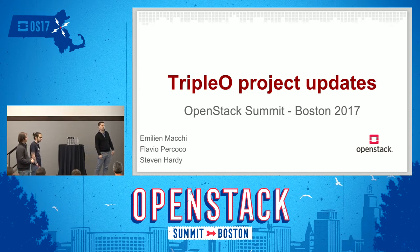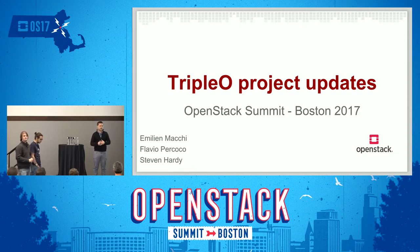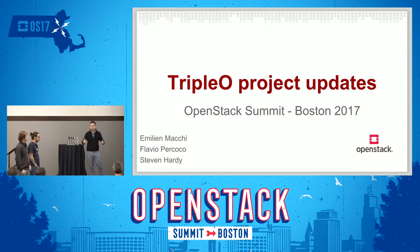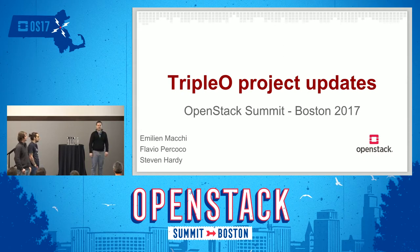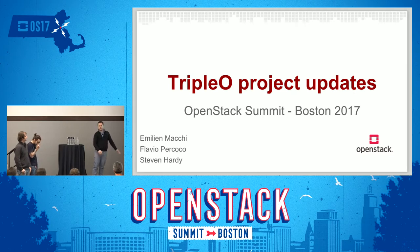This session is about what's going on in TripleO — what we are doing now and what we will do next. If you are interested in TripleO or just curious, this is a good place to be. My name is Emilien Macchi. I'm French, I live in Canada, and I work for Red Hat. I'm the current Project Technical Lead, and I'm here with my friends because I don't like talking alone.